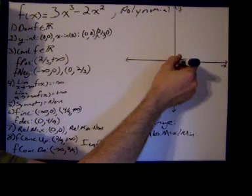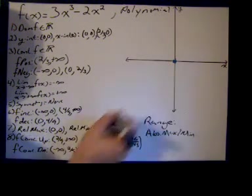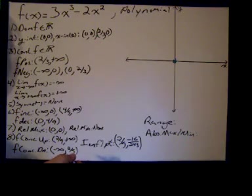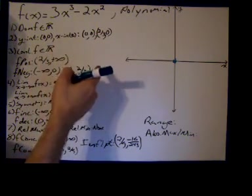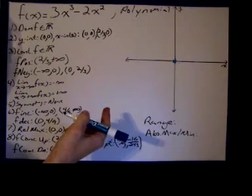These will be my x intercepts, this kind of a teal color. I hope it shows up. So I have 0, 0 is on the graph. And then I'm going to, the x intercept is, since my y intercept was 0, 0, I have an x intercept of 0, 0 as well.